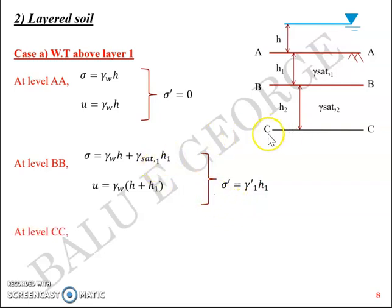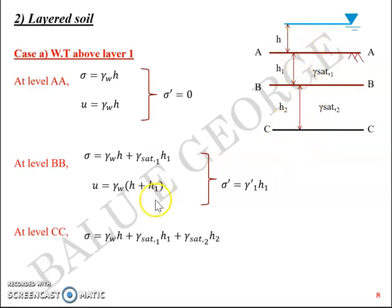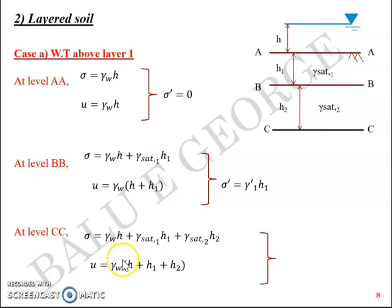Now the third level is CC. The total stress is gamma_w*h plus gamma_sat1*h1 plus gamma_sat2*h2. Neutral stress is gamma_w into (h + h1 + h2), which is the total height of the water table above CC. The effective stress sigma dash is obtained by subtracting U from sigma, giving gamma_dash_1*h1 plus gamma_dash_2*h2.